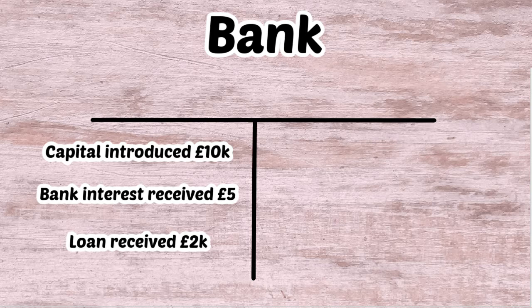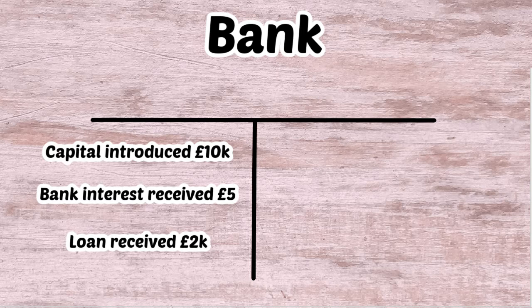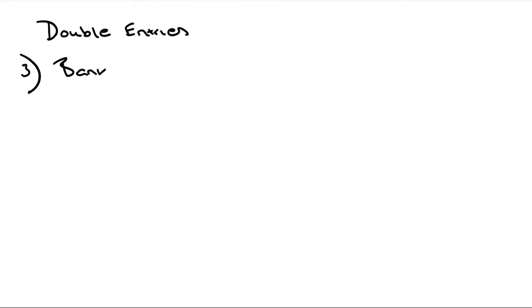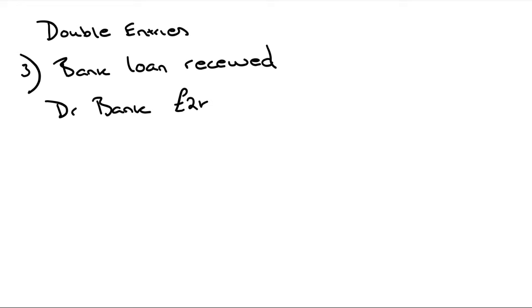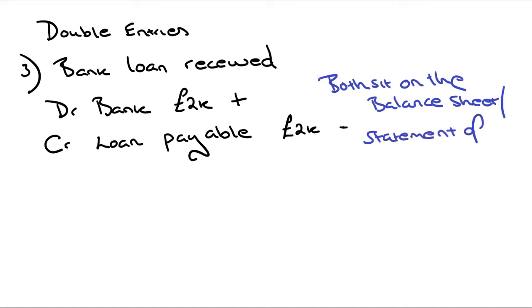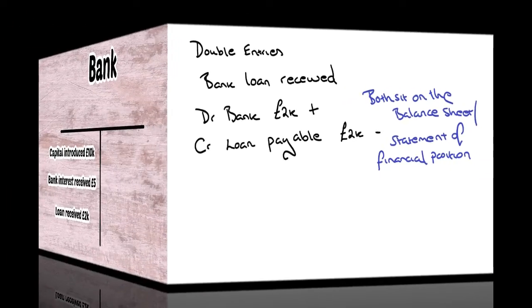Next we take out a bank loan of £2,000 to eventually purchase some office equipment. Similar to capital introduced and bank interest received, we're increasing the bank balance, so we debit the bank. The double entries are: debit bank £2,000 and credit loan payable £2,000. Both sit on the balance sheet or statement of financial position, and the £2,000 does not hit the profit and loss account.